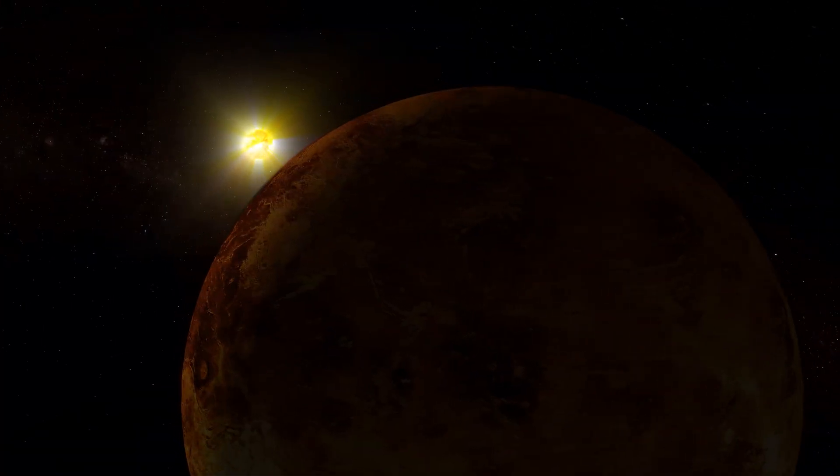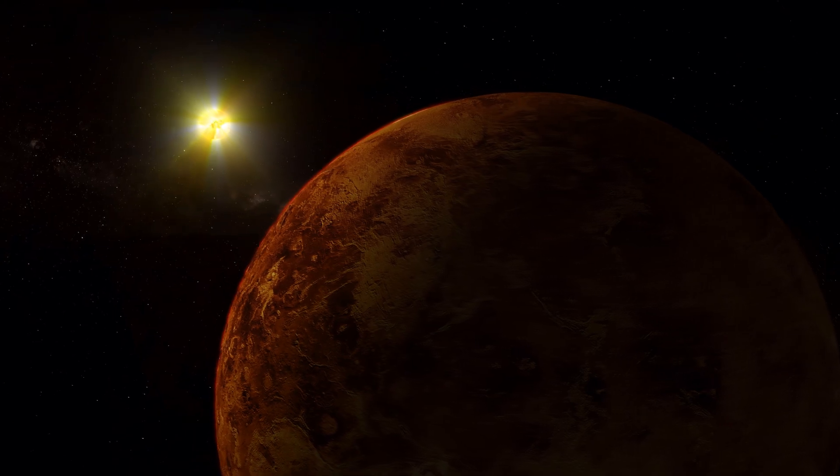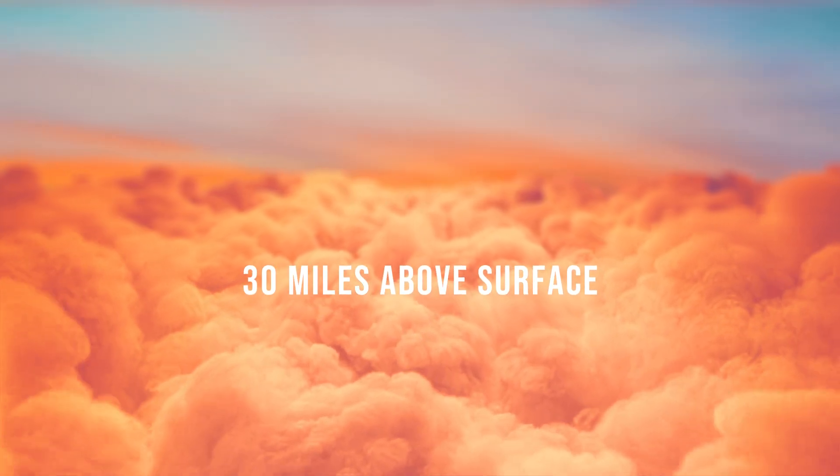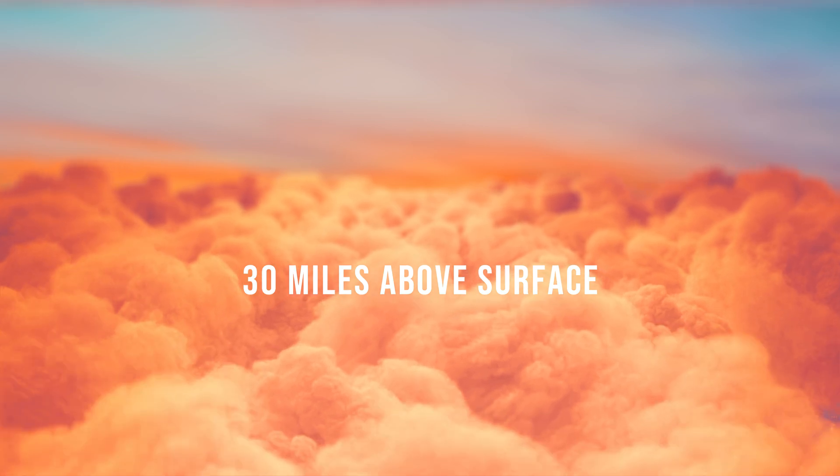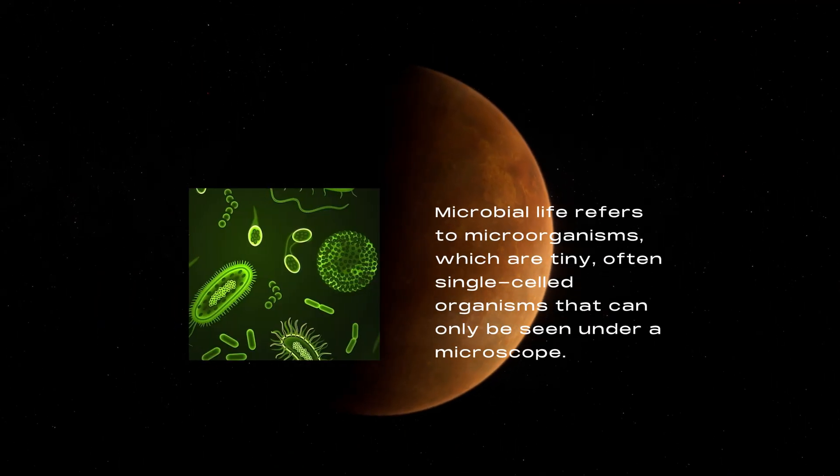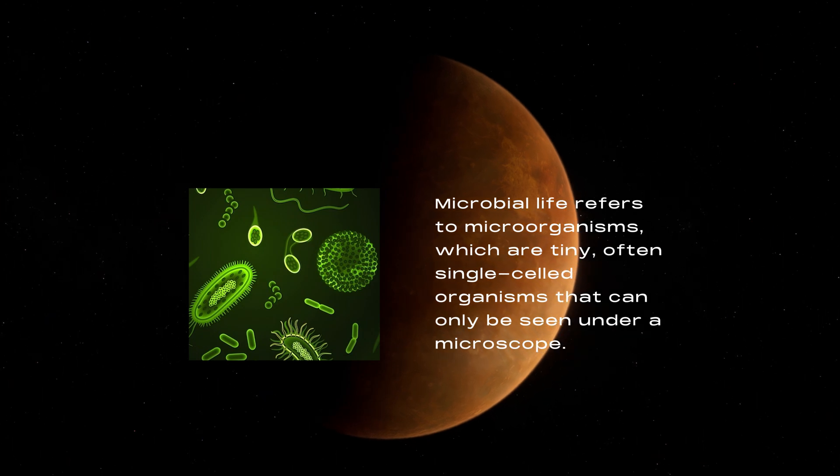While the surface of Venus is extremely inhospitable, the upper atmosphere offers a more temperate environment. About 30 miles above the surface, in the clouds, the temperature and pressure conditions are much milder, and scientists have speculated that microbial life could potentially survive.